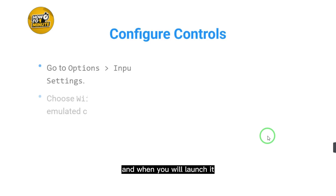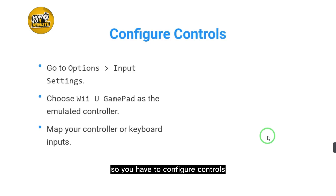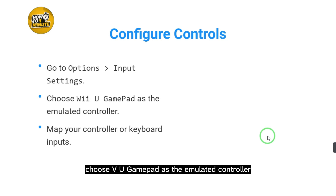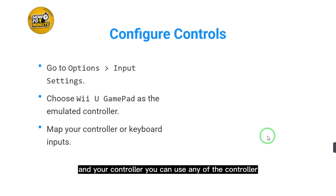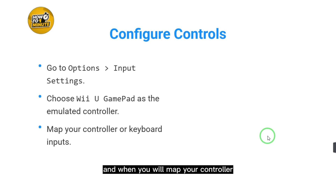When it launches, you have to configure controls. Go to Options and then Input Settings. Choose Wii U Gamepad as the emulated controller, then map your controller or keyboard inputs. You can use any controller — DualShock 4, DualShock 5, or any other. When done, select Save.